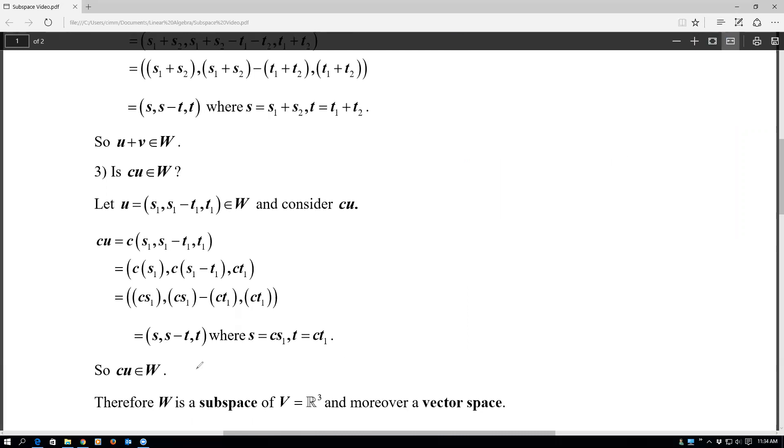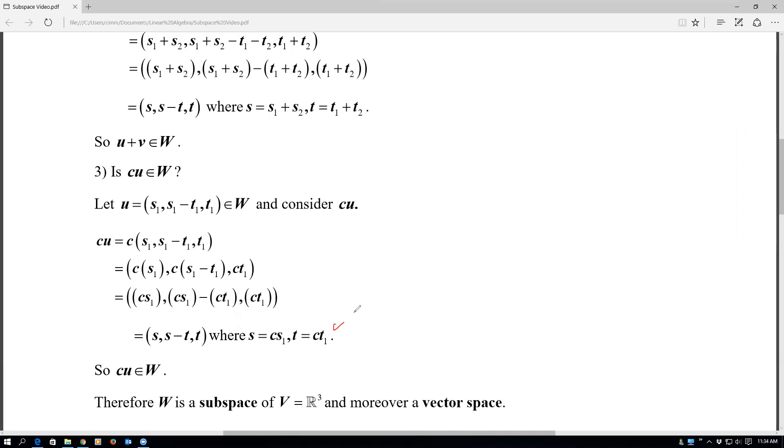So that is really our last checklist. So really we only have to show those two things, but we've shown the zero vector's in there too. So we've essentially shown that W is a subspace, and therefore a vector space in its own right. So it's easier to show something as a subspace than to have to show all those ten properties.